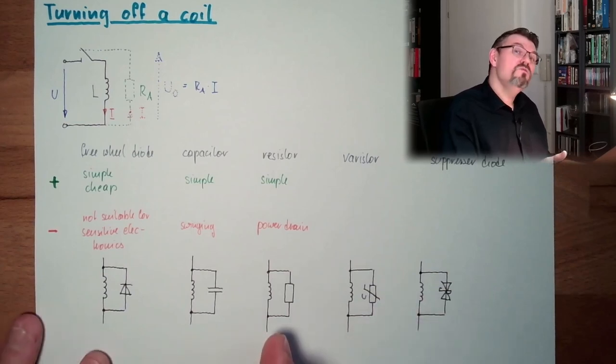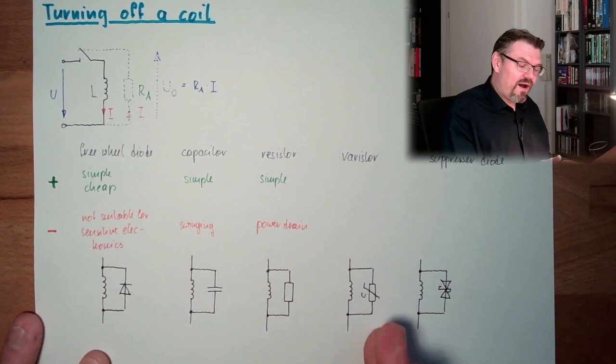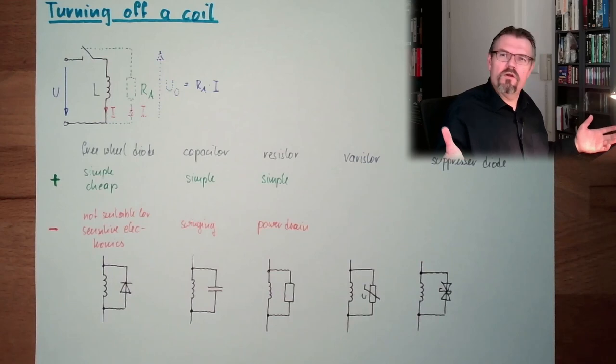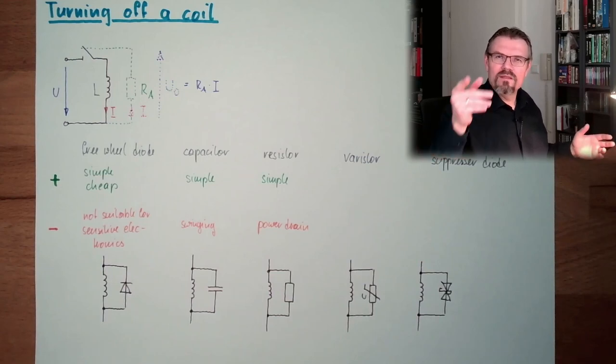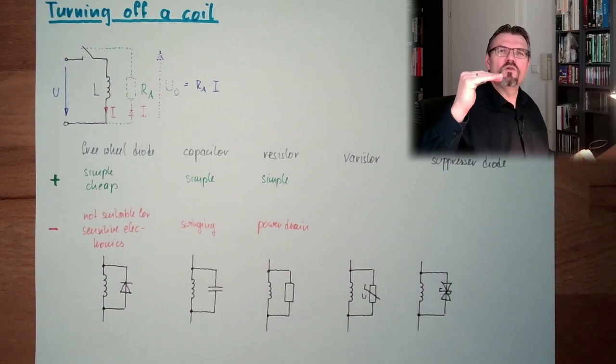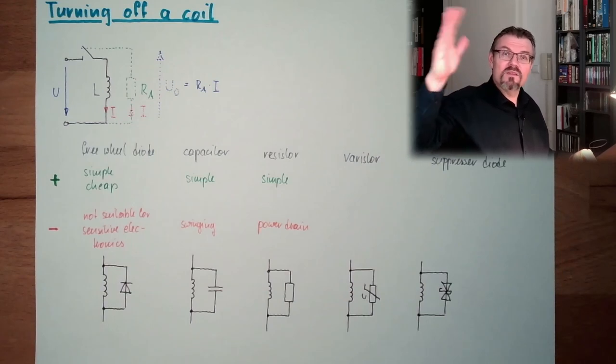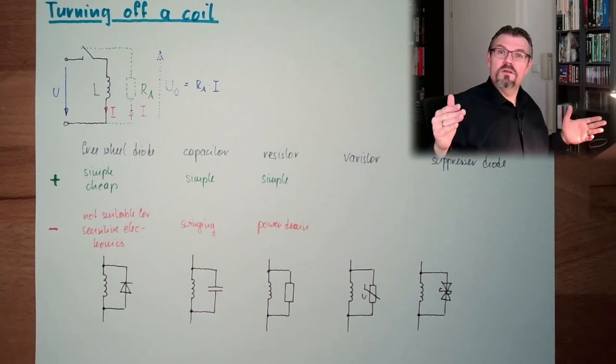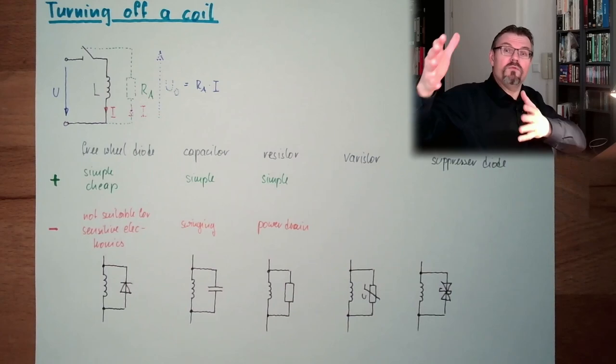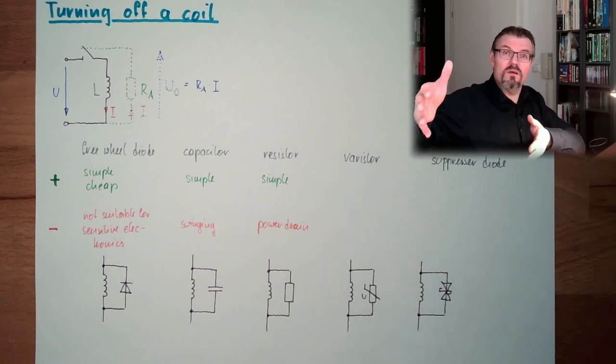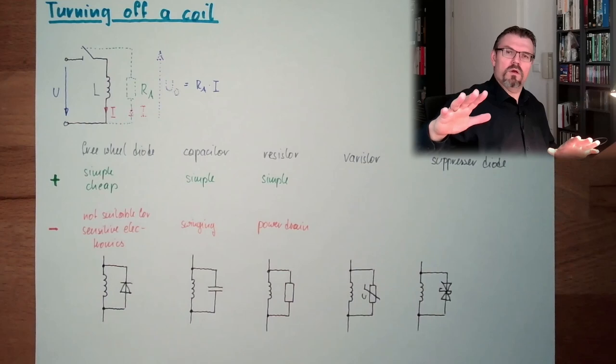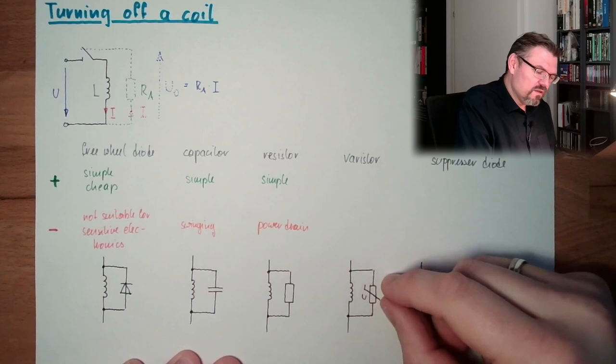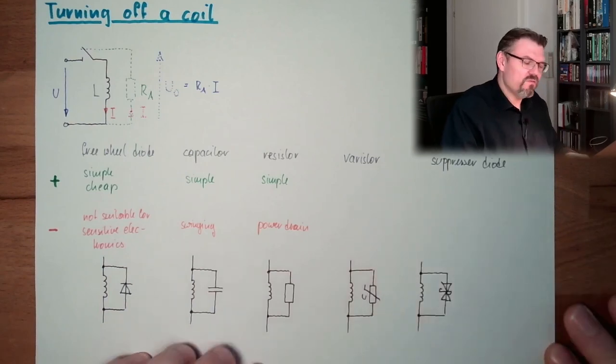Then, instead of a resistor, I can use a so-called varistor. A varistor is an element, which is blocking. There is no current passing through. Until the voltage has reached a certain level, then suddenly it's getting conductive. It's like an over-voltage protection. If the voltage has reached a certain level, it will be conductive. And if it's dropping again under this level, it will block again.